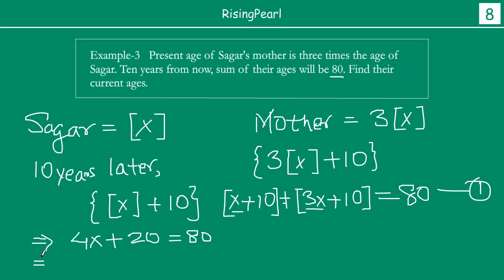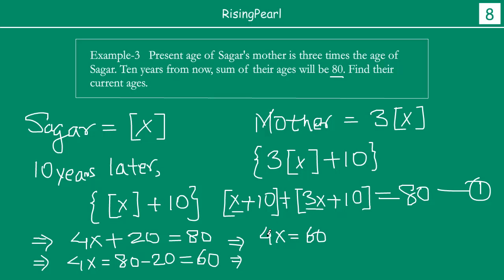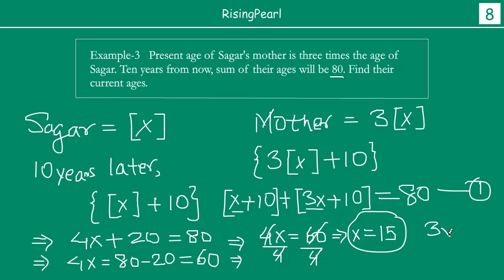Now we will do the same thing: subtract 20 from both sides, transposing the 20 to the other side. We get 4x equals 80 minus 20, so 4x equals 60. Dividing both sides by 4, x equals 60 divided by 4. Four 15s are 60, so x equals 15. So Sagar is 15 years old, and Sagar's mother's current age is 3x, which is 3 times 15, so she is 45 years old.